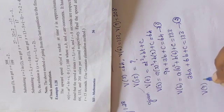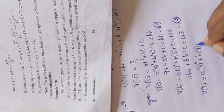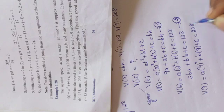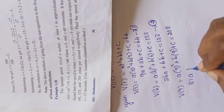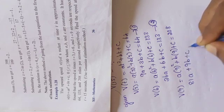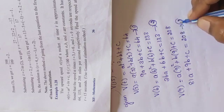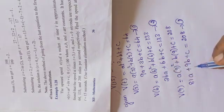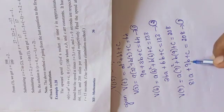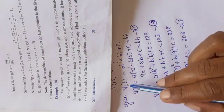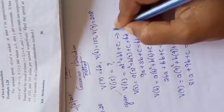Then v(9) = a(9²) + b(9) + c = 208. So 81a + 9b + c = 208. This is equation number 3. Now we have 3 equations. Using these we have to find a, b and c, and then substitute in v(t).